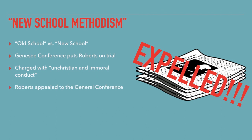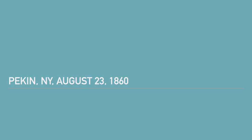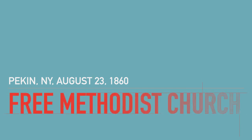He and sympathizing clergymen and laymen appealed the case to the general conference. Before this conference, these dissenters passed a resolution declaring their devotion to their church and unwillingness to secede due to their commitment to Methodism. However, the general conference denied their appeal and their expulsion was finalized. Due to their commitment to Methodism, Roberts and the expelled clergymen and lay leaders convened in Pekin, New York, on August 23rd, 1860, the result of which was the formation of a new denomination: the Free Methodist Church.